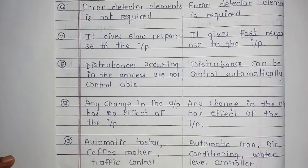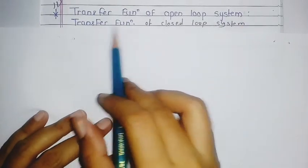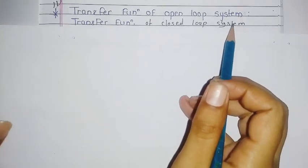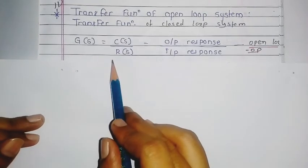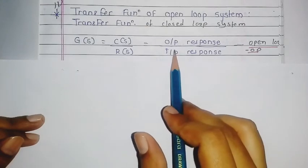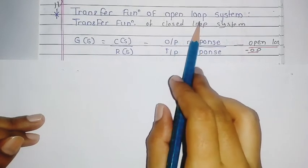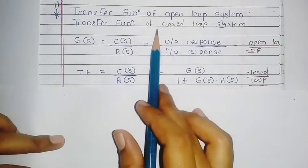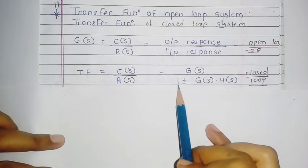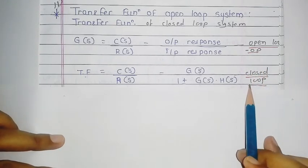The eleventh comparison point is the transfer function. The transfer function of the open loop system is G(s) = C(s) / R(s), which is the output response to the input response. The transfer function of the closed loop system is C(s) / R(s) = G(s) / (1 ± G(s)·H(s)).